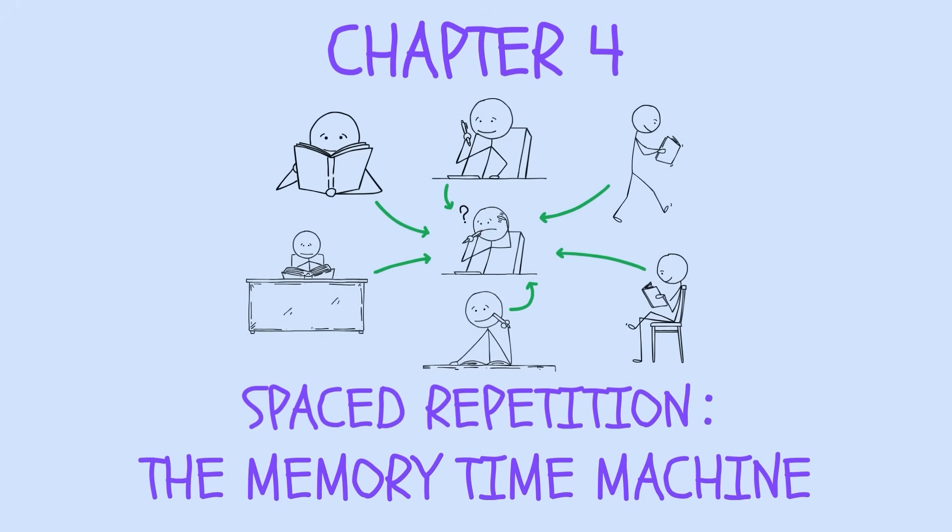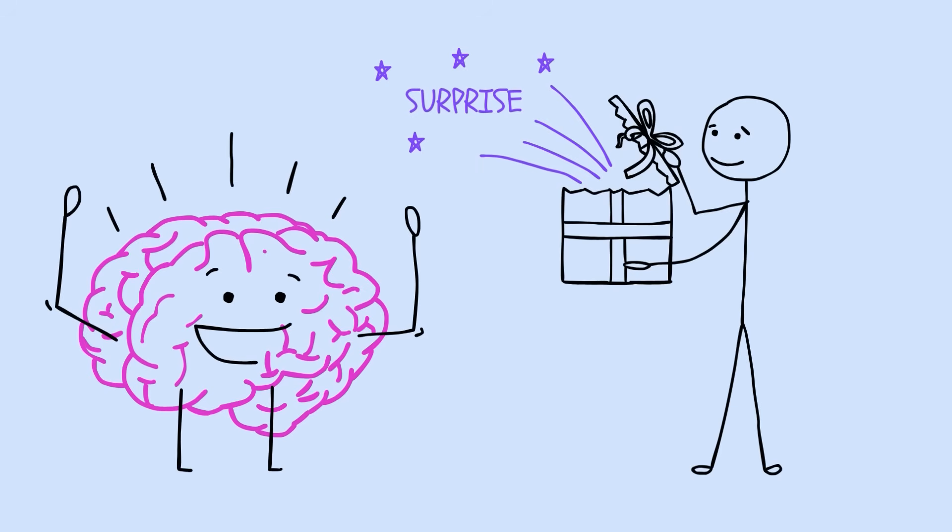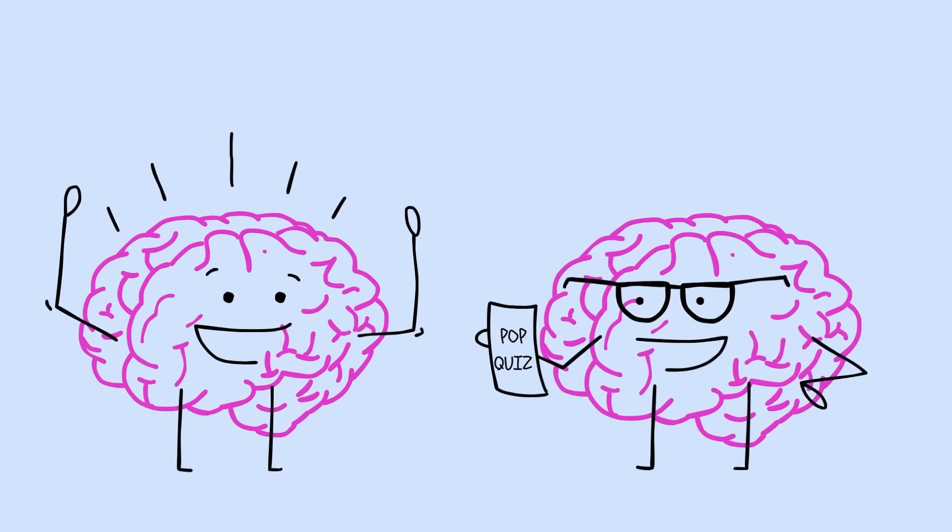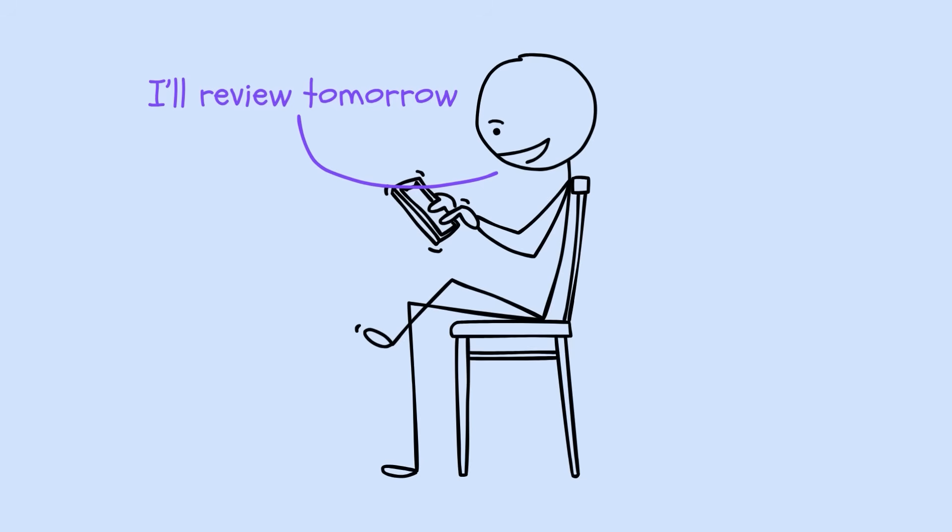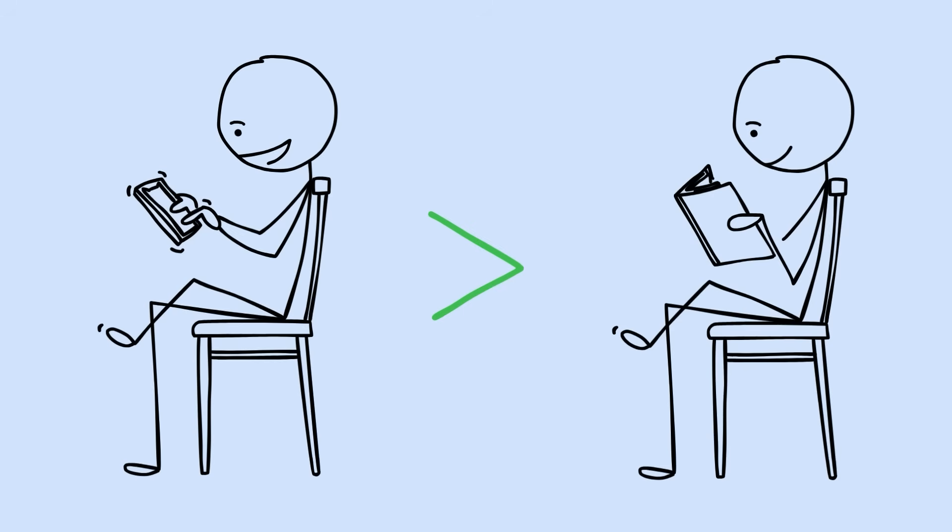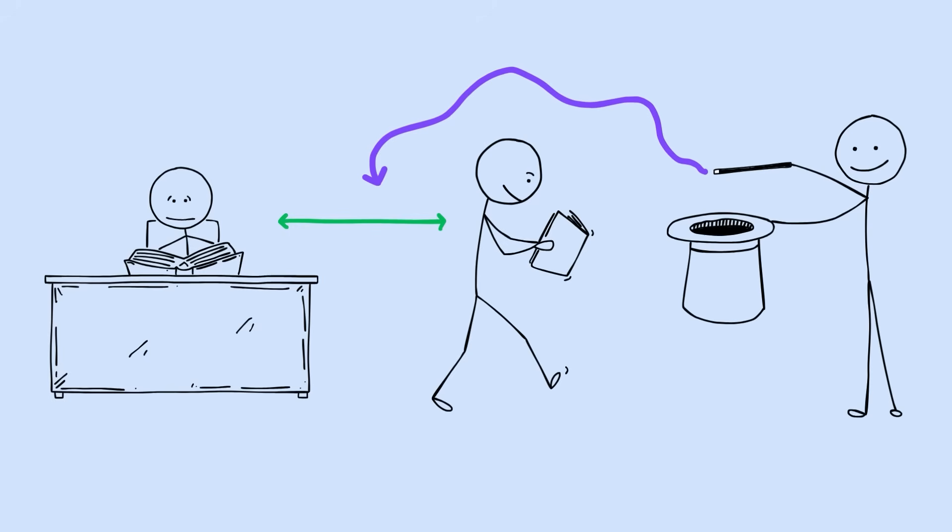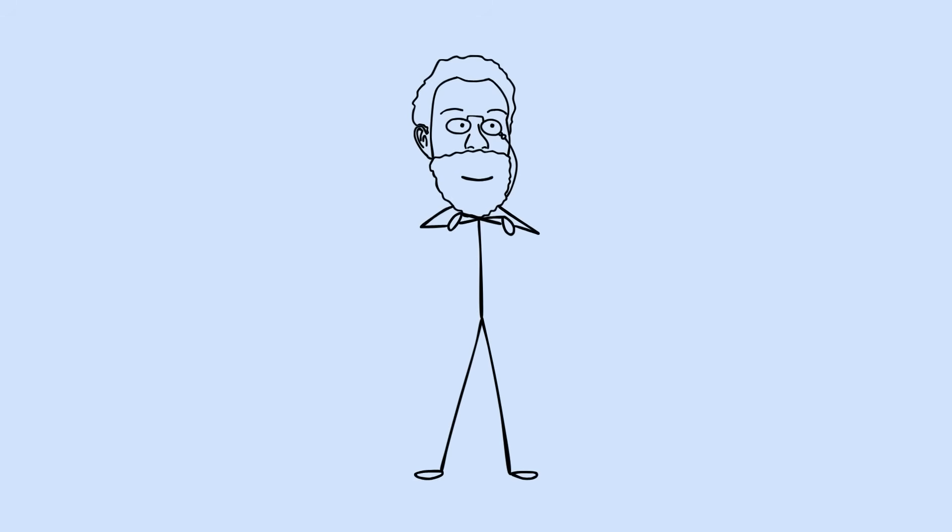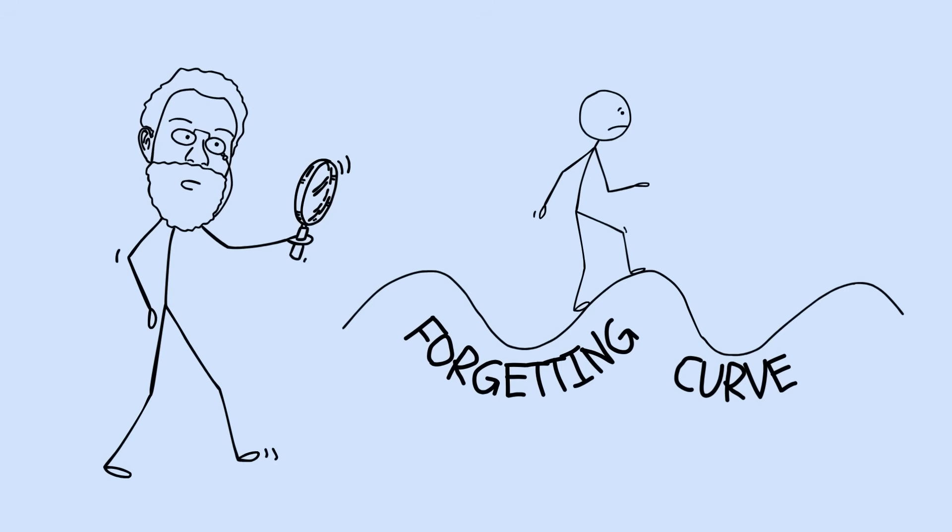Chapter 4. Spaced Repetition, the memory time machine. Your brain loves surprises, especially pop quizzes from itself. Here's what blew my mind. Reviewing something tomorrow is more powerful than reviewing it today. The magic happens in the spacing, not the studying. Herman Ebbinghaus didn't just discover the forgetting curve, he found the antidote. The research is crystal clear.